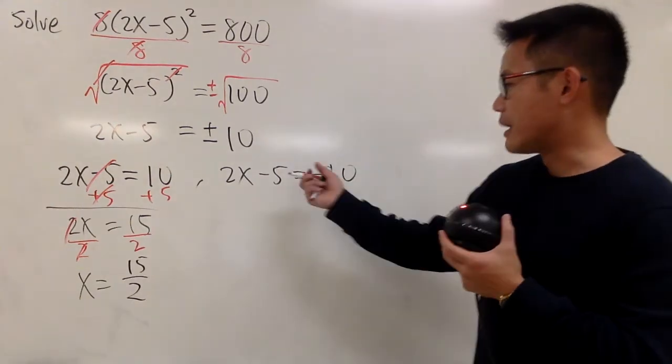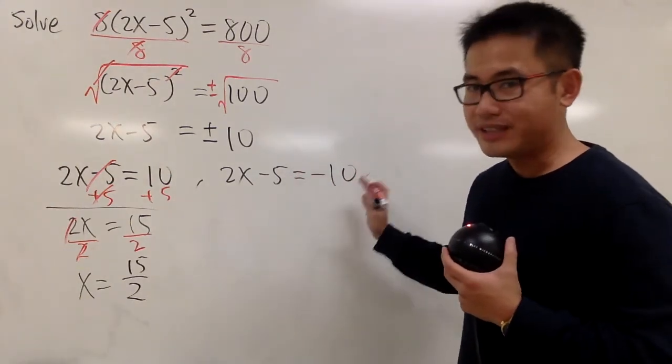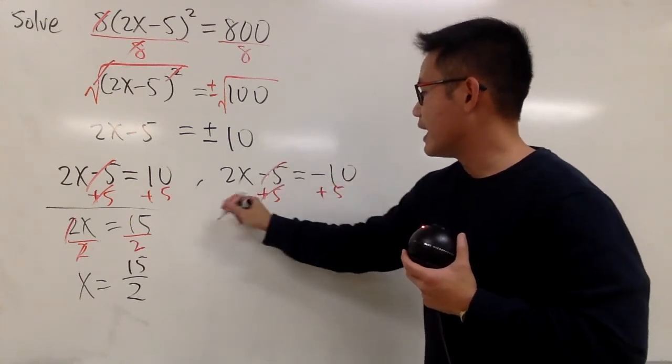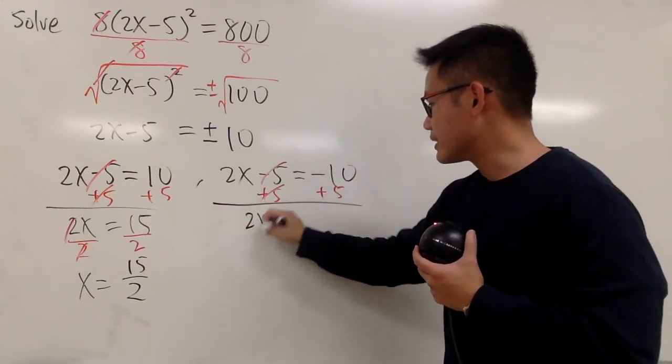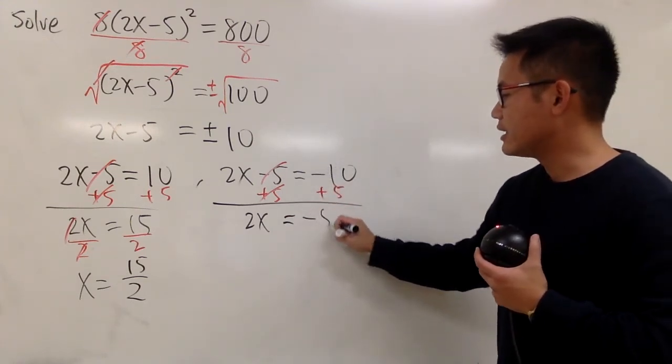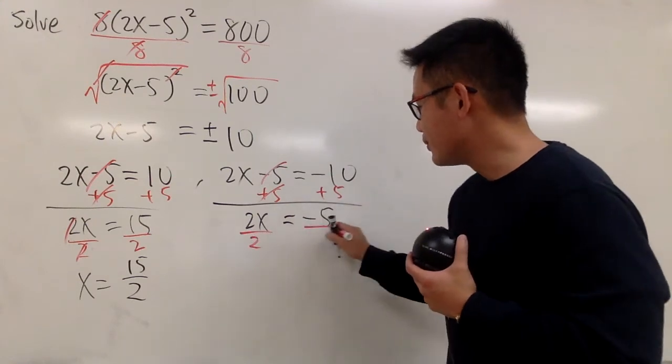On the other hand, we do the same thing, but with negative 10 on the right-hand side. We still add 5 on both sides. And then this is 2x equal to negative 10 plus 5 is negative 5, and then we just divide both sides by 2.